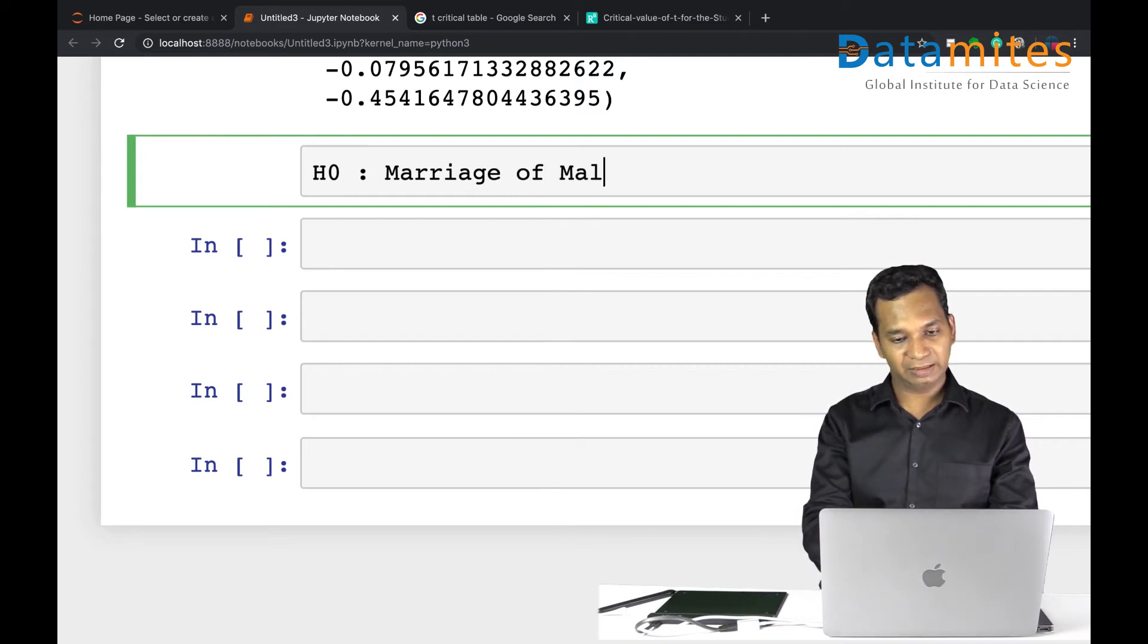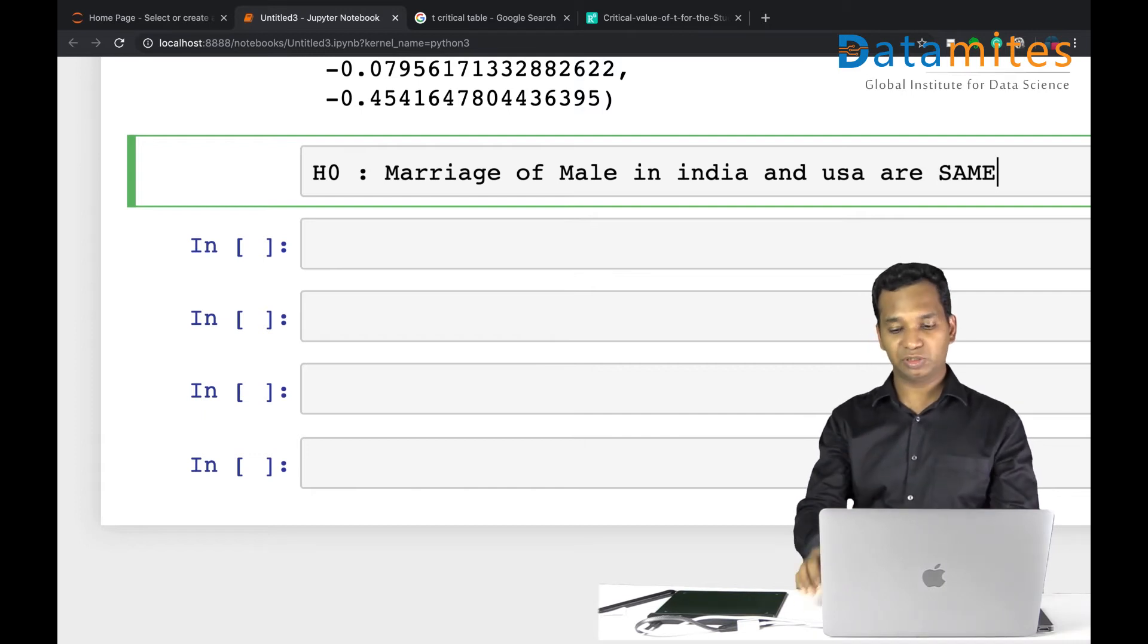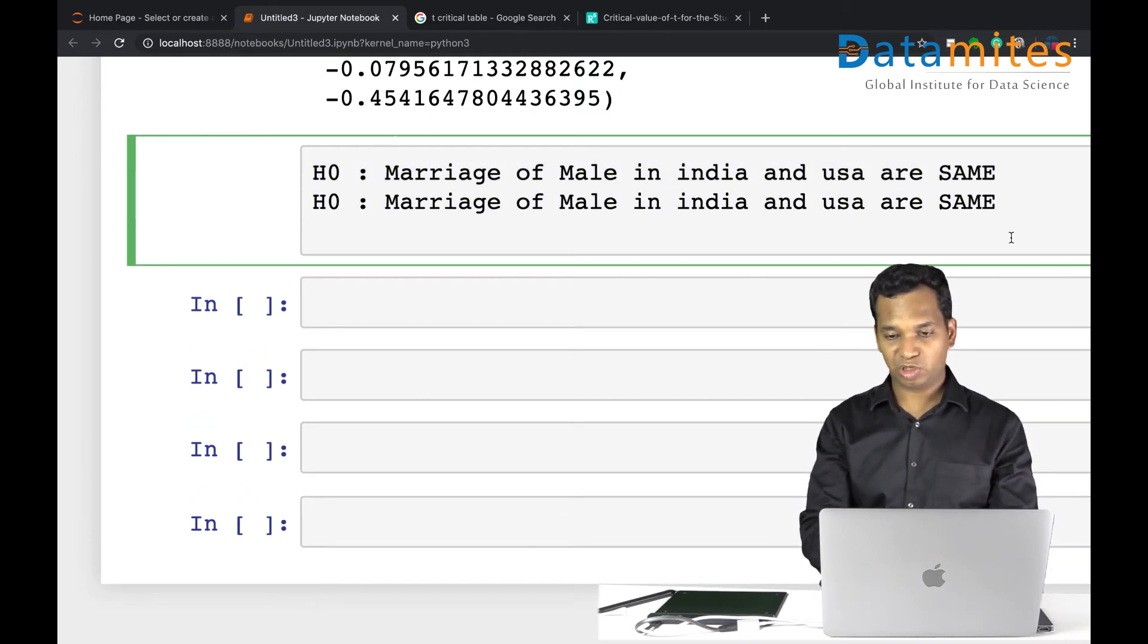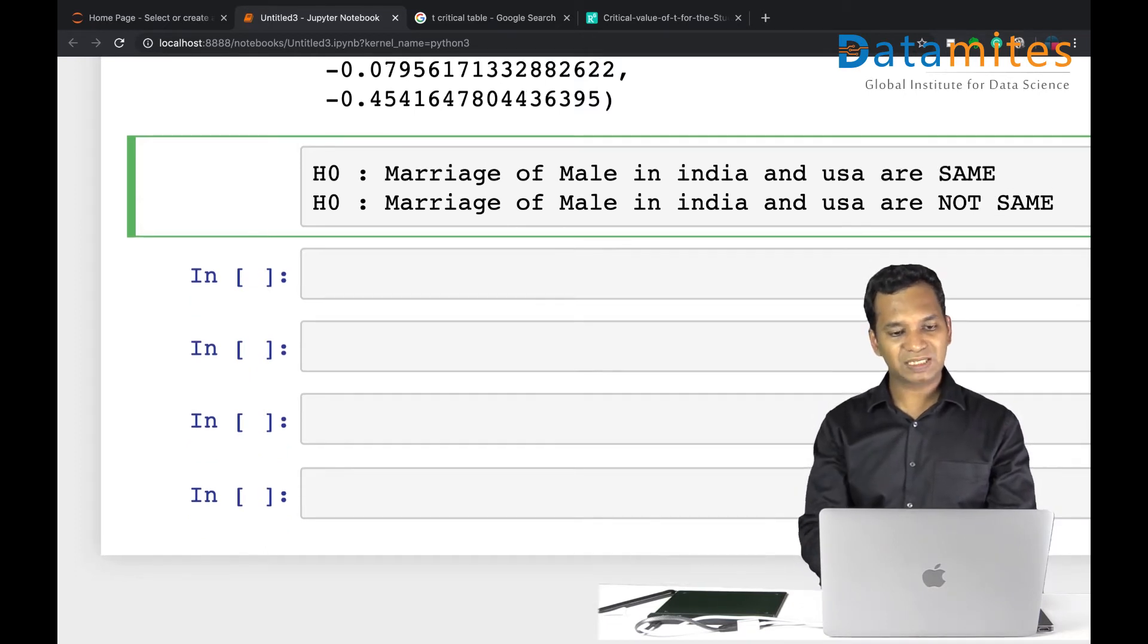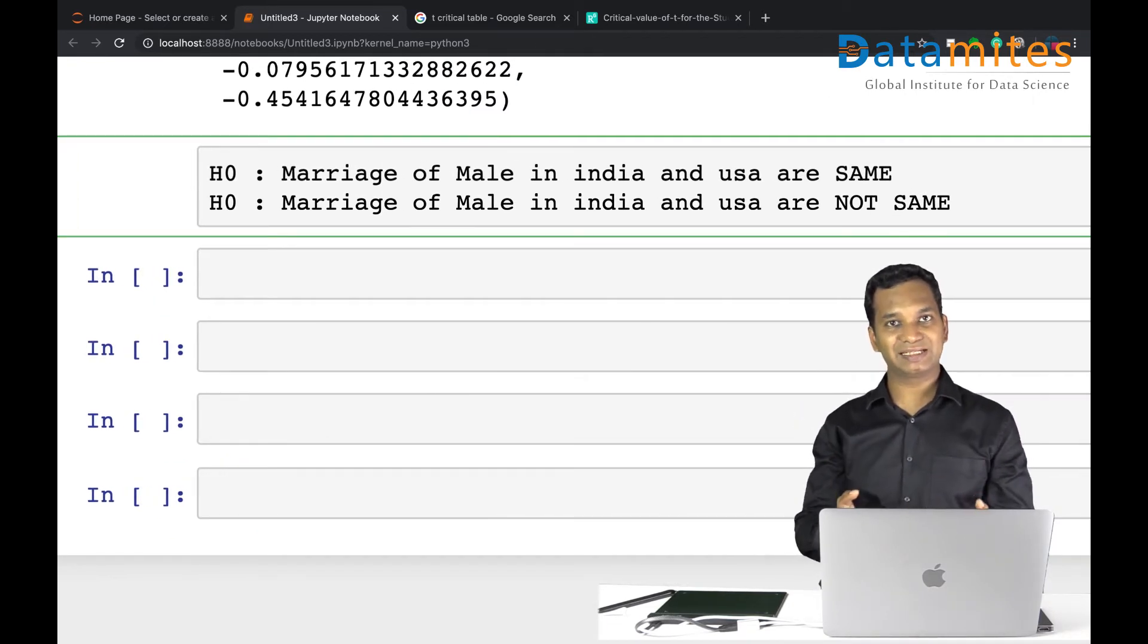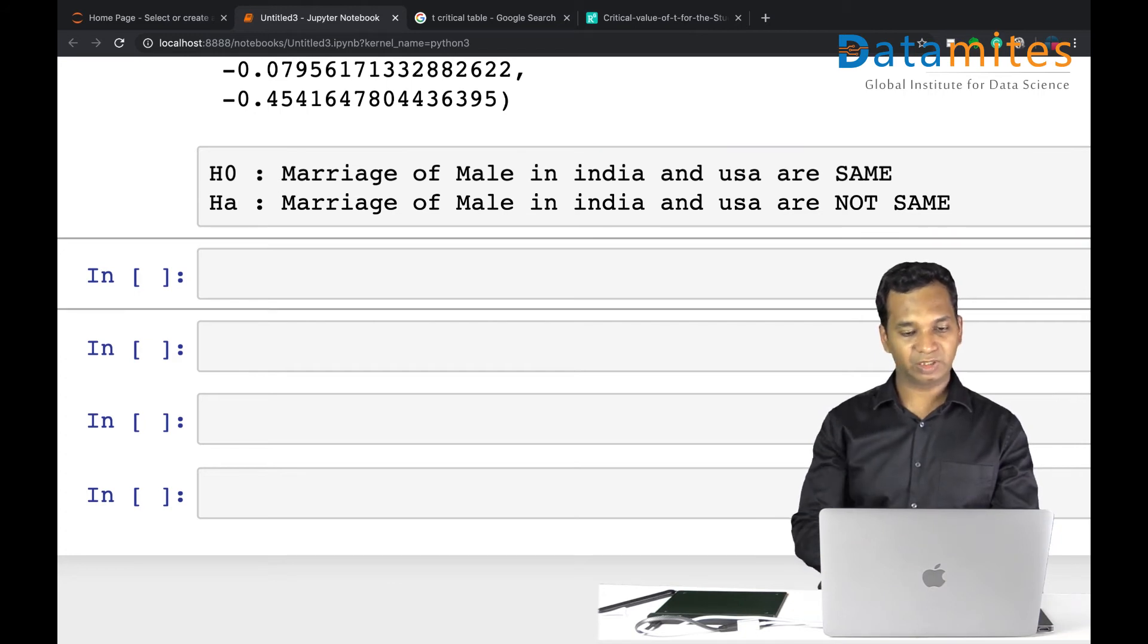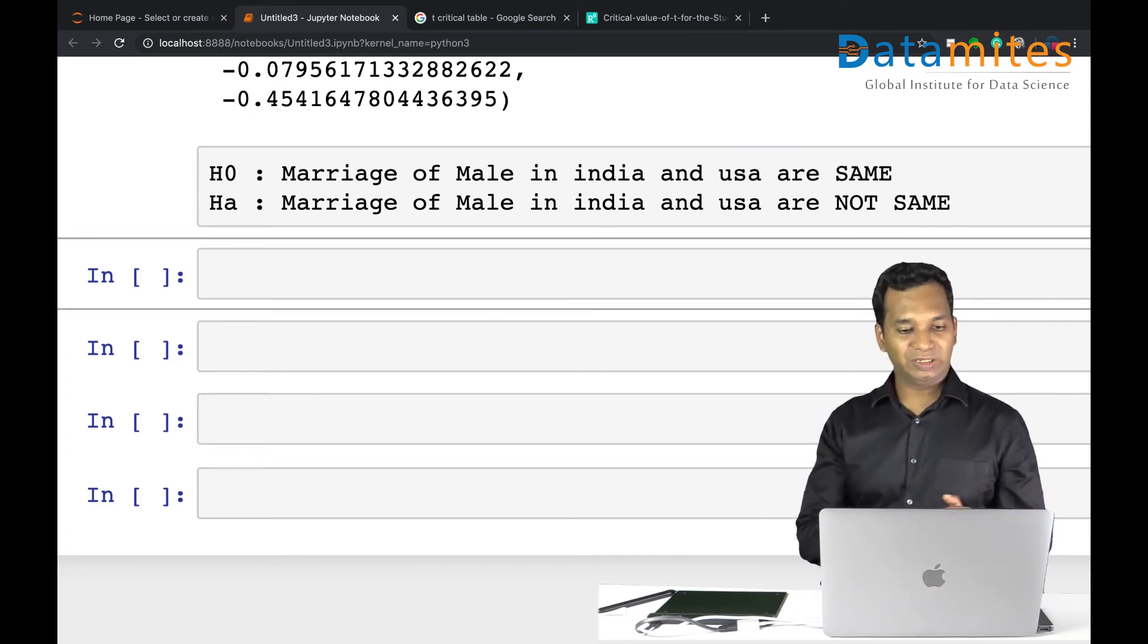I'll say marriage age of a male in India and USA are same. Okay, that's good. So what's going to be the alternate hypothesis? It's pretty straightforward, not same. So copy the same thing and say not same. I'm over-simplifying this so that you can understand it, but you know this is good enough for a data science professional.